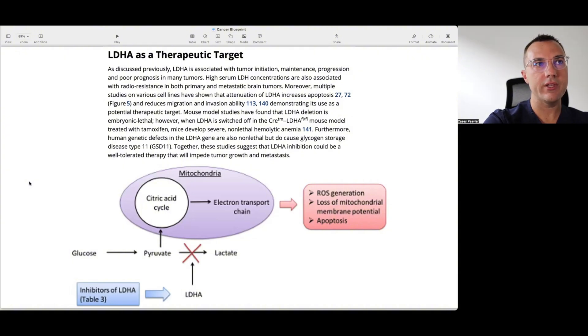Mouse model studies have found that LDHA deletion is embryonically lethal. However when LDHA is switched off in this other mouse model treated with tamoxifen mice develop severe non-lethal hemolytic anemia or where the red blood cells actually break down. Furthermore human genetic defects in the LDHA gene are also non-lethal but do cause glycogen storage disease type 11. Together these studies suggest that LDHA inhibition could be a well-tolerated therapy that will impede tumor growth and metastases.